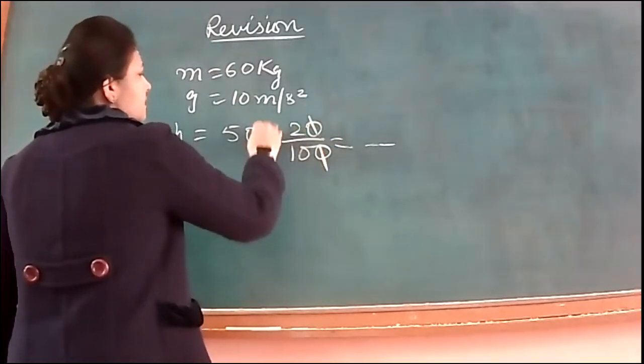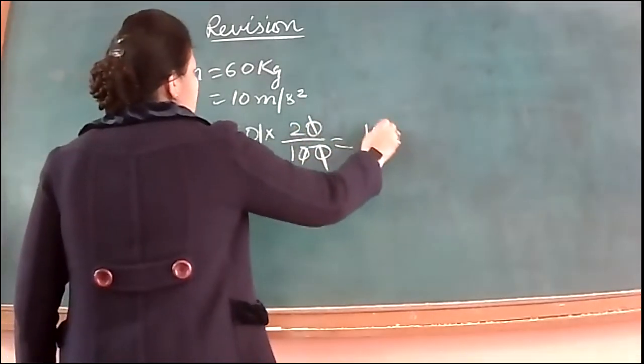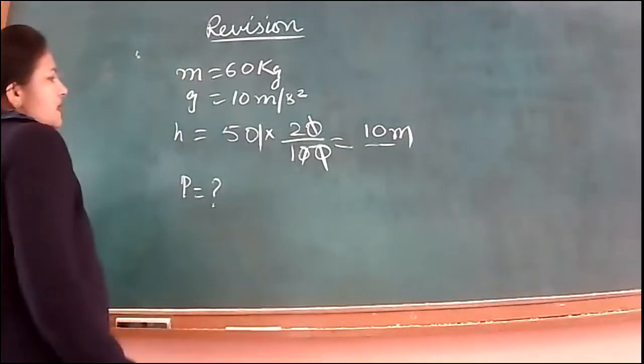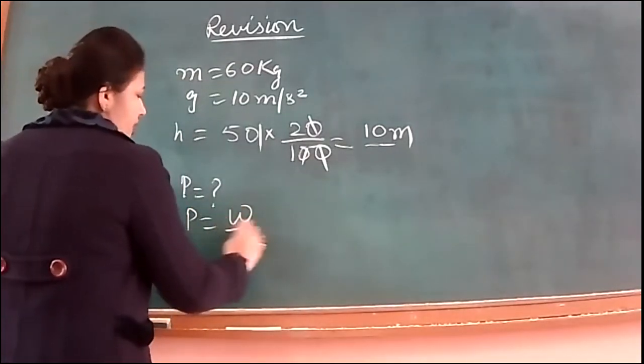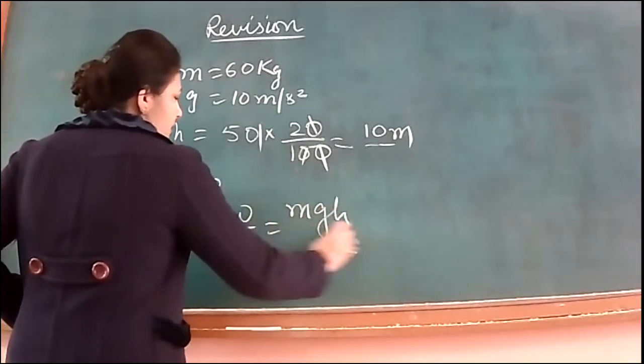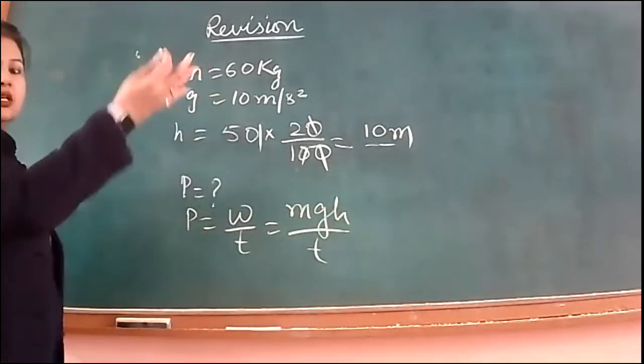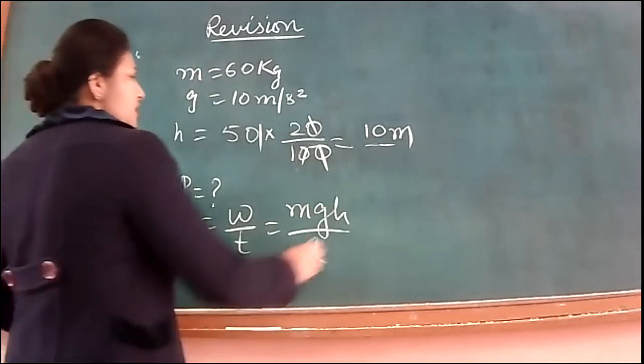So total height is number of steps into the height of one step, which is 20 centimeter. So we convert it into meter by dividing by 100. So we have to calculate the power used. So let us solve this question and see what's our answer.